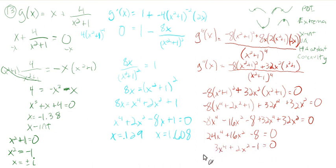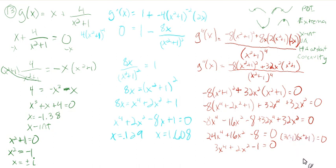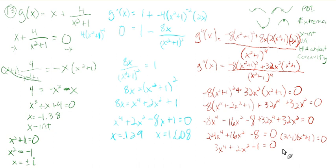This is in quadratic form and can be factored: (x²+1)(3x²-1) = 0. Setting 3x²-1 = 0 gives x = ±√(1/3). The x²+1 = 0 factor gives imaginary solutions, which we don't need. So at x = ±√(1/3), the second derivative equals zero — possible points of inflection.